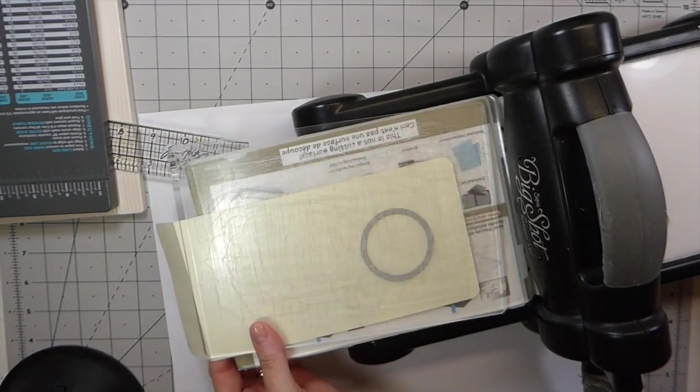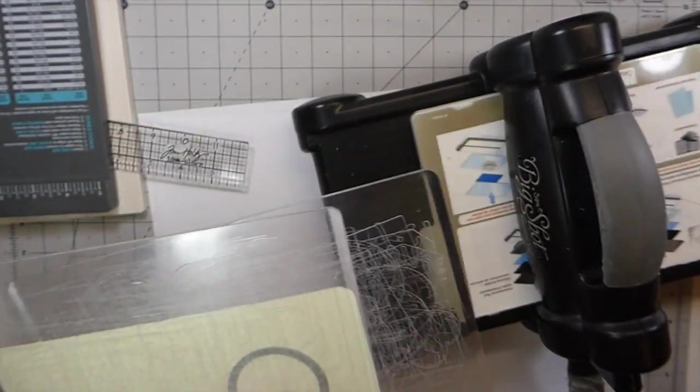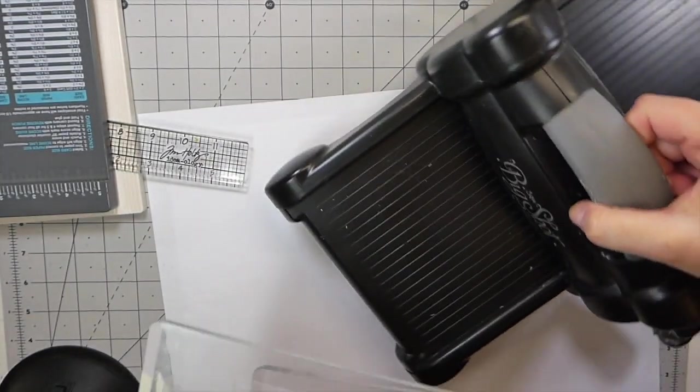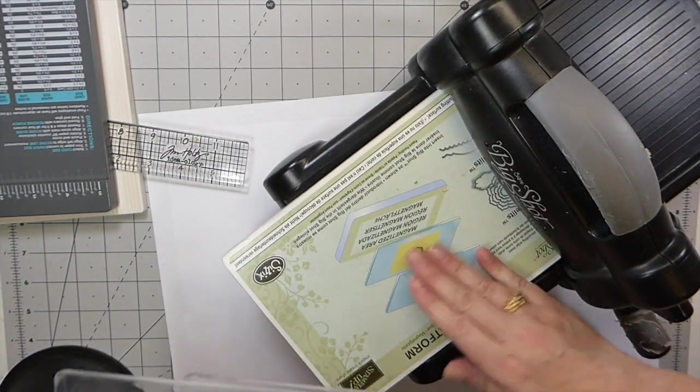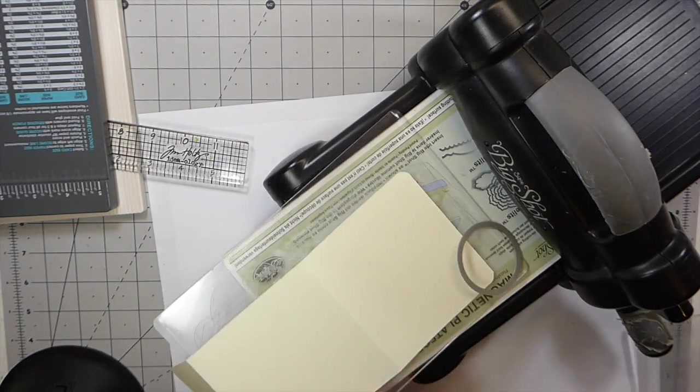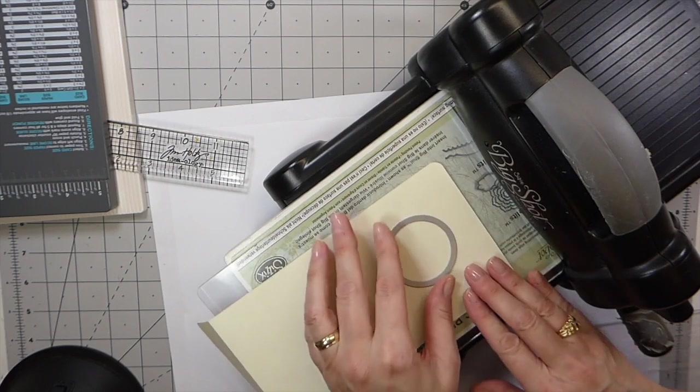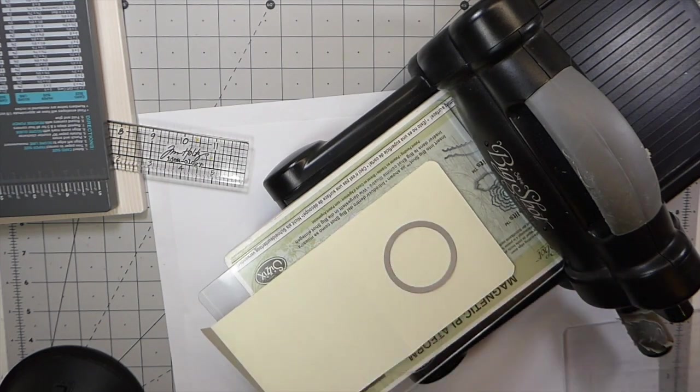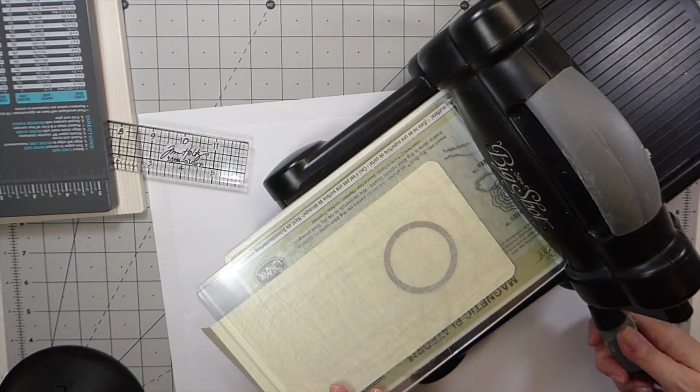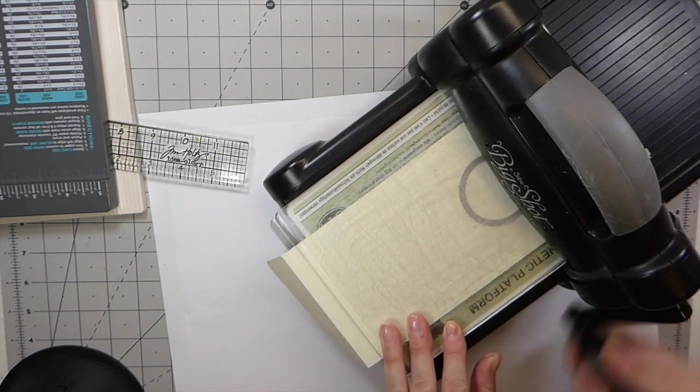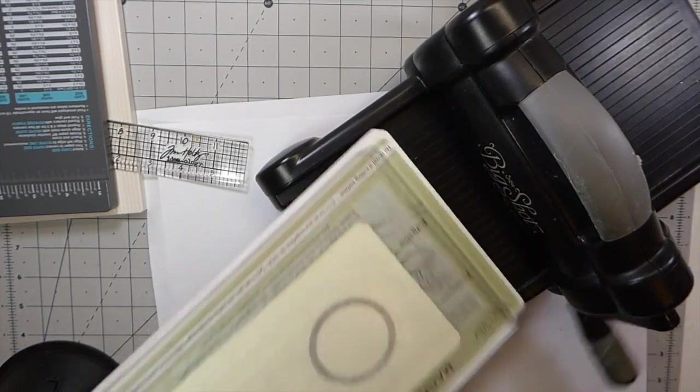I've got the wrong platform, sorry guys, because of the embossing I've grabbed the wrong platform. That's the only downside to the big shot, is I like this magnetic for the framelits, but when you go to do the embossing you've got to get the original platform and it is annoying when you're going back and forth. But we have to do it, don't we. So now let me switch that back.